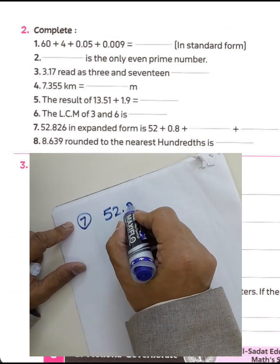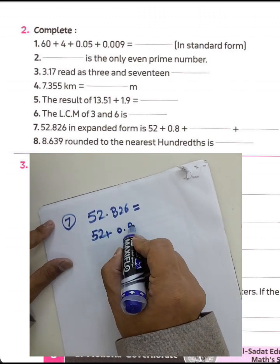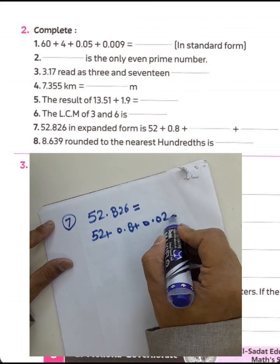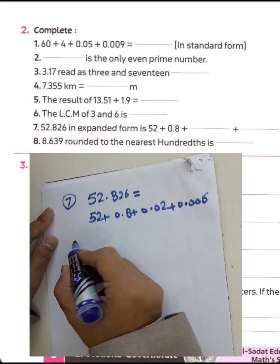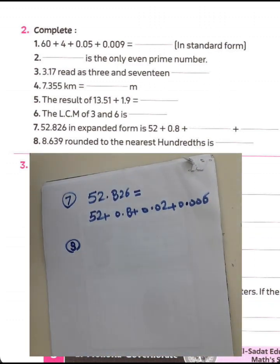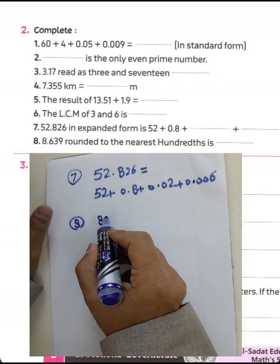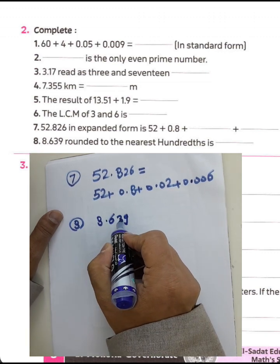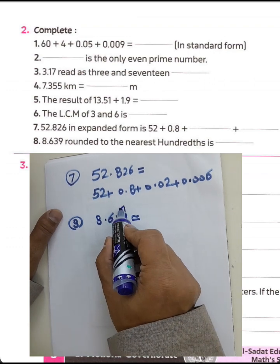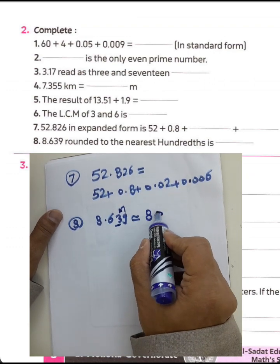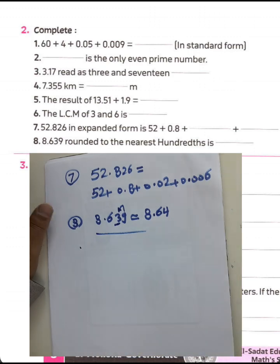For the expanded form of 52,826: 52 is the whole number part — write 50,000 plus 2,000 plus 800 plus 20 plus 6. Question 8: Round to the nearest hundredth. The digit 9 rounds up, so we write 8.64 to the nearest hundredth.